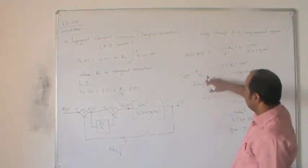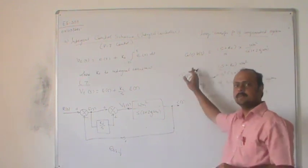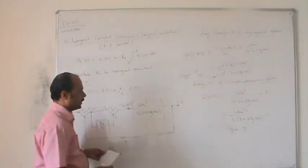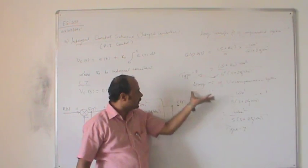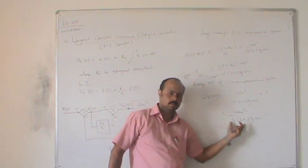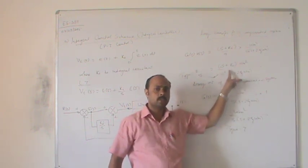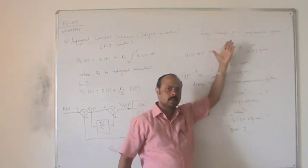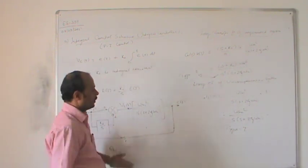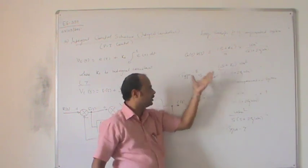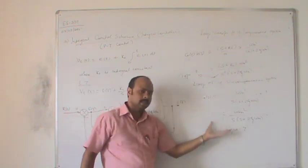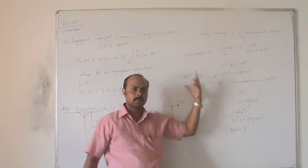There is a change in type — an increase in the type of the system — so there will be a reduction in steady state error. But we also have the drawback of this system: as we increase the type, we are increasing the order of the system. The uncompensated system has maximum order s², here the compensated has order s³. As we increase the order of the system, there is more complexity and it can become unstable. That is the drawback, but if improvement is required, we have no option other than to use the integral control scheme.